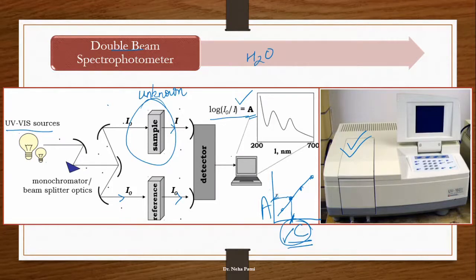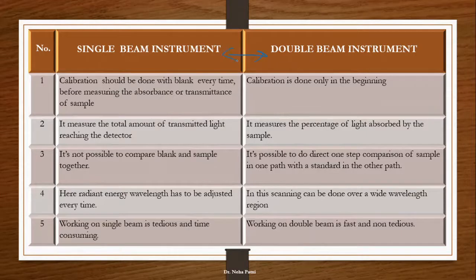If you calculate the absorbance using the detector and plot it on the graph, after extrapolating you will know the concentration. That is a very important and unique feature. Now, how are we going to differentiate or compare? It is very simple - in single beam, the calibration has to be done with blank every time before measuring the absorbance so that the blank solution won't interfere. While in double beam, the calibration is done only in the beginning and we take both beams together.